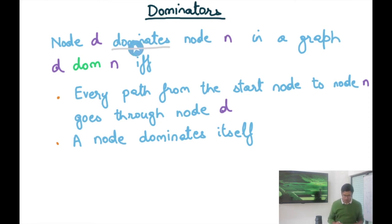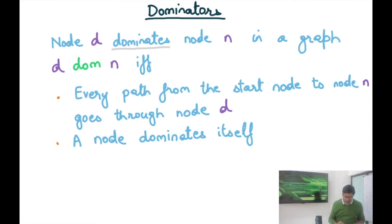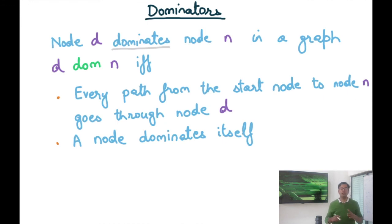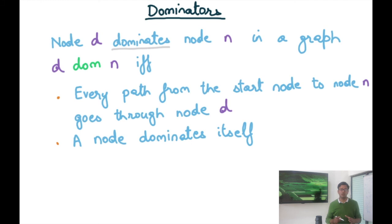The domination relation (written d dom n) is a relationship between two nodes in the control flow graph. Node d dominates node n if and only if every path from the start node of the CFG to node n goes through d. Every possible path — including paths through loops — that reaches n from the start node must pass through d. We also assume that a node dominates itself, so domination is a reflexive relation.